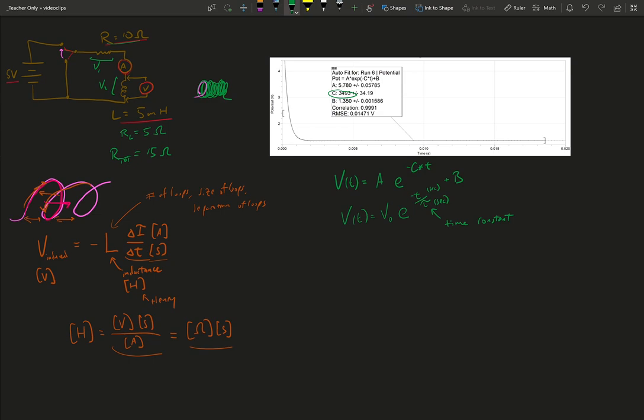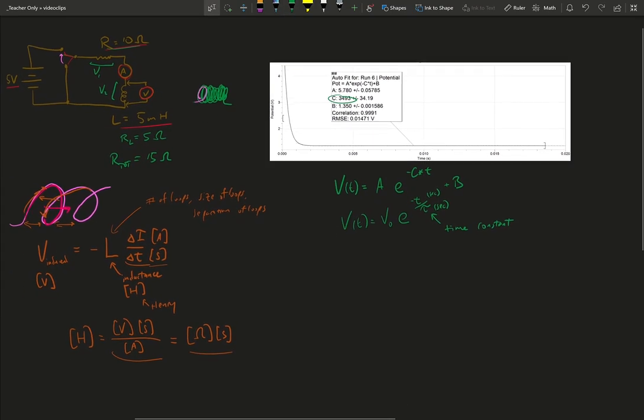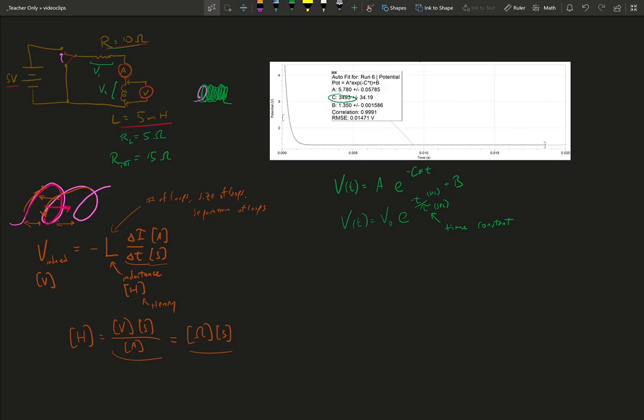Very similar to the time constant for capacitors where we had the resistance times the capacitance of the circuit gave us the charging or discharge rate for the capacitor. In this case we don't have a capacitor as part of the circuit. We have a resistor and we have an inductor and those two are going to couple together to give us a time constant.